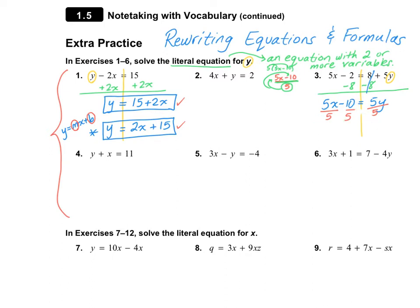So 5 over 5 cancels to 1, giving us X, and 10 divided by 5 is 2. So X minus 2 equals Y. If you want to write it as an equation of the line Y equals MX plus B, you would write Y equals X minus 2. That's acceptable as well.